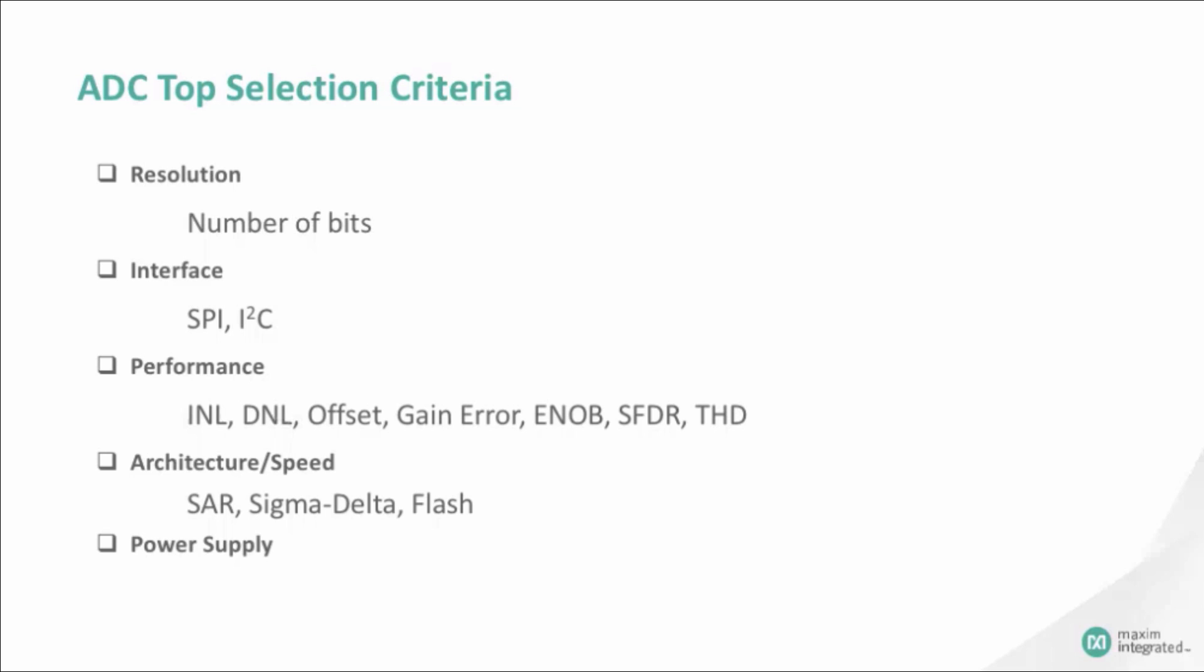Digital interface, such as SPI, I2C, parallel, etc. ADC performance, such as INL, DNL, offset, gain error, ENOB, SFDR, THD, etc. The speed of conversion required, which leads to the ADC structure or architecture. The power supply range required by the ADC.